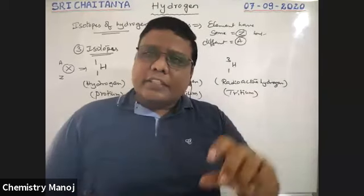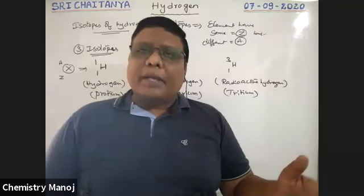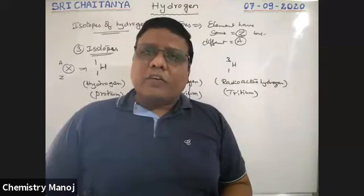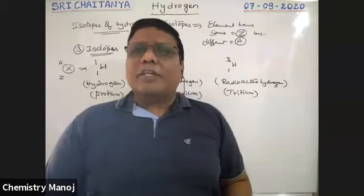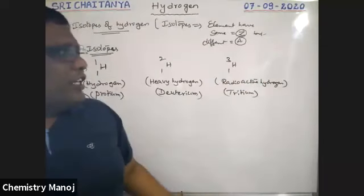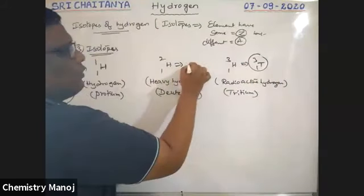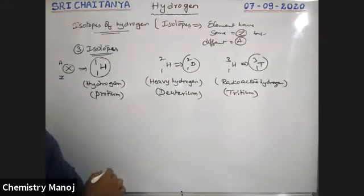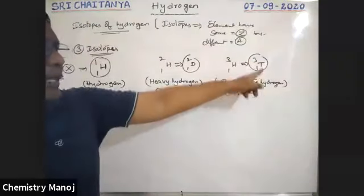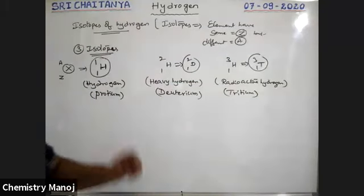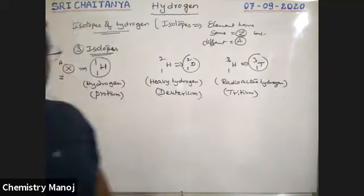Radioactivity means a species itself undergoes disintegration, dissociating by the emission of radiation such as alpha, beta, or gamma — such elements are called radioactive substances. Tritium (₁T³) is a radioactive isotope; it is the smallest radioactive isotope of any element. The nucleus of normal hydrogen (₁H¹) contains only one proton and no neutrons — that is why it is called protium. It is the only nucleus without a neutron.